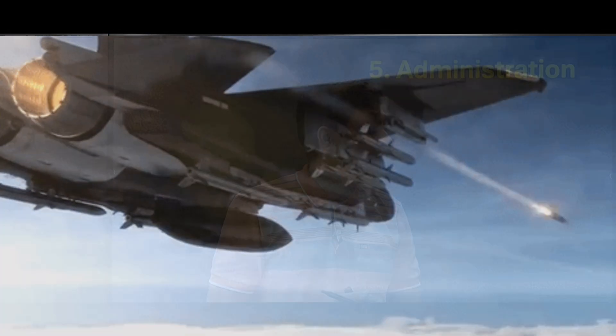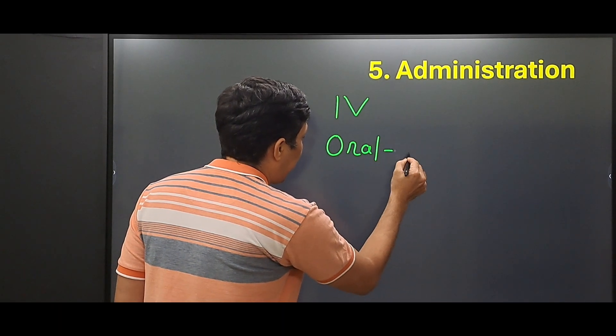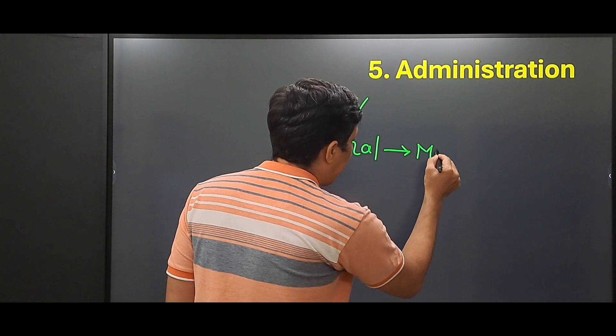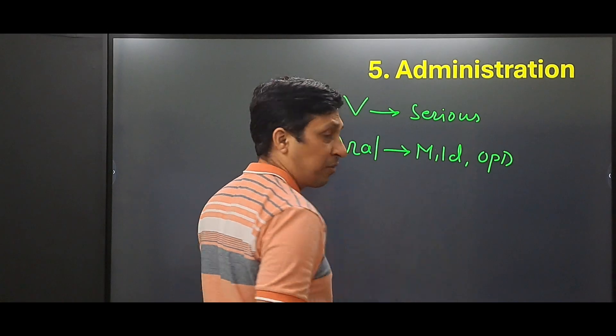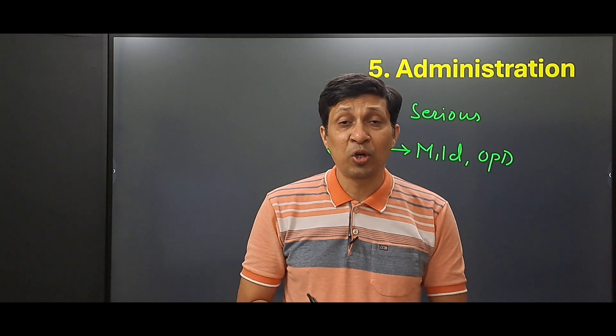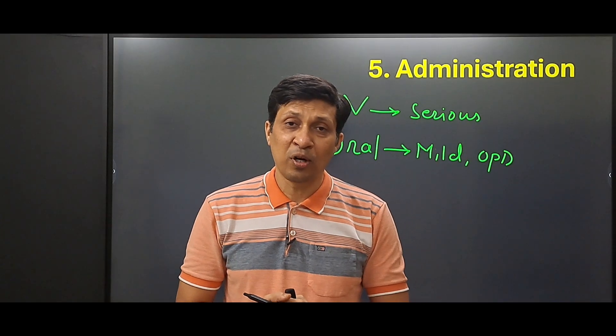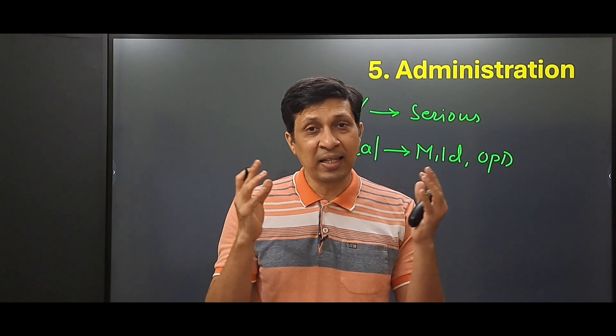The fifth principle is deciding how to administer the antibiotic — like choosing the vehicle for delivering a missile, whether a rocket launcher or an aerial route. For antibiotics, decide between IV route or oral route. If the infection is mild and the patient is treated in OPD, oral route is preferred; if serious, go for IV. In developing countries like India, also consider the cost of the antibiotic, since many patients are poor — if you can achieve desired results with a low-cost antibiotic, nothing like it.